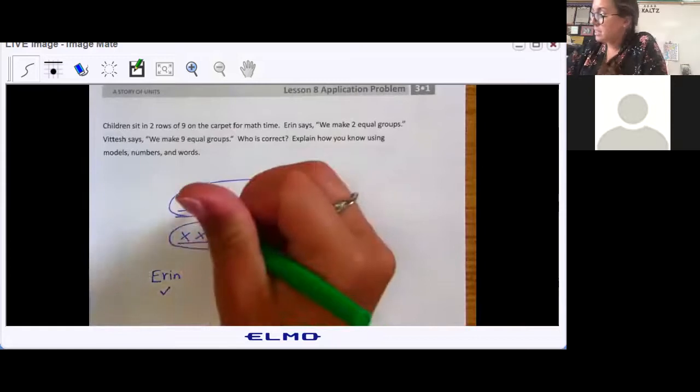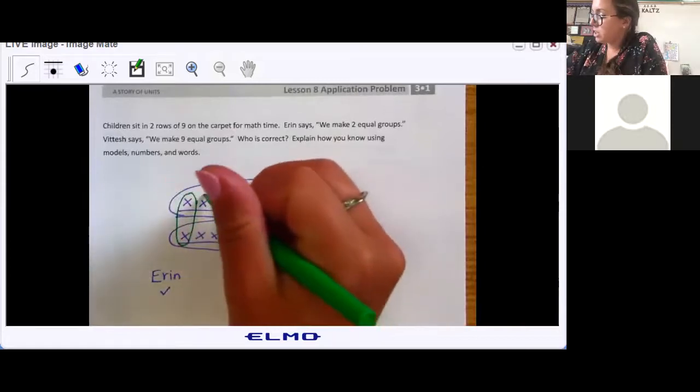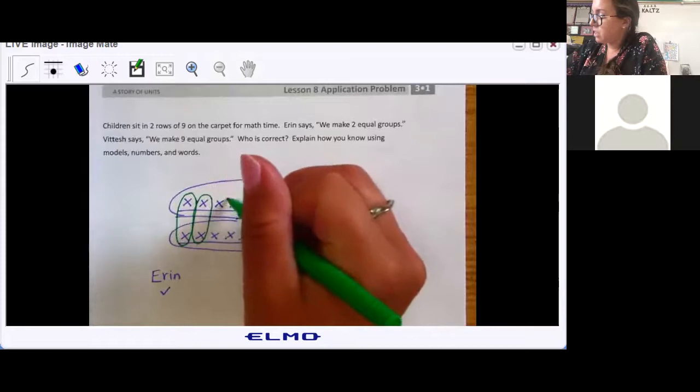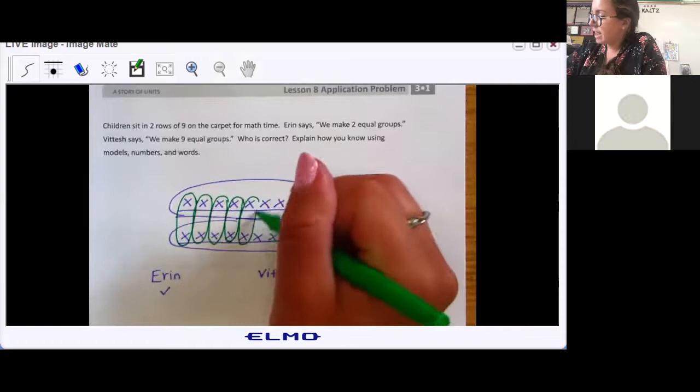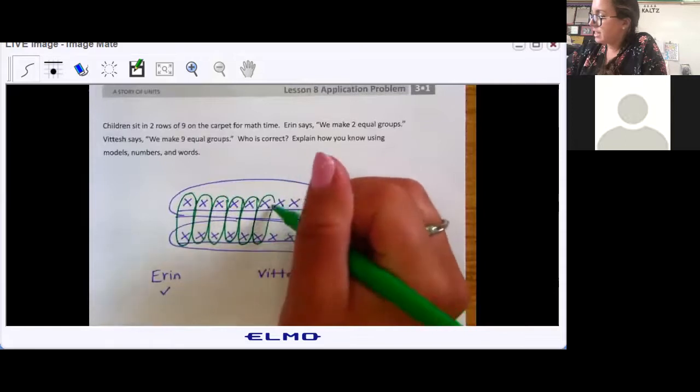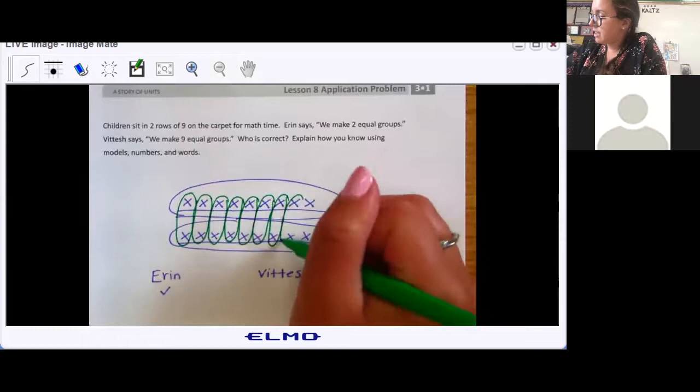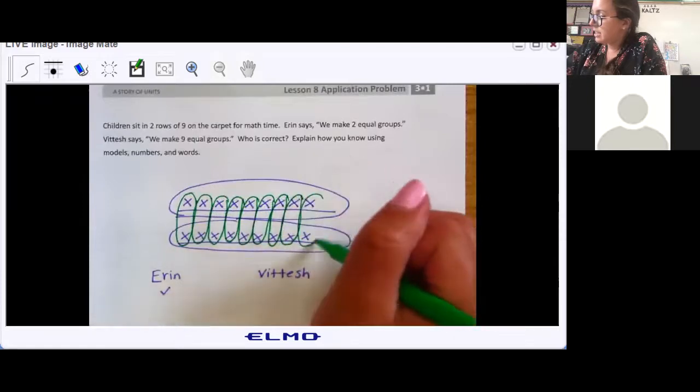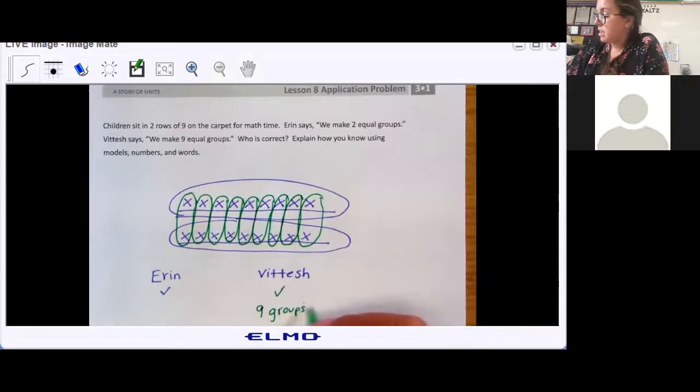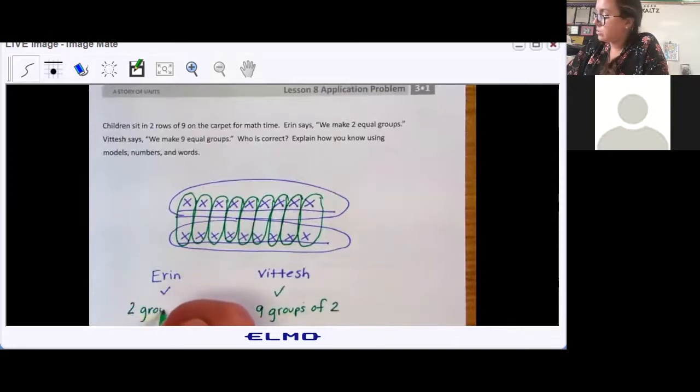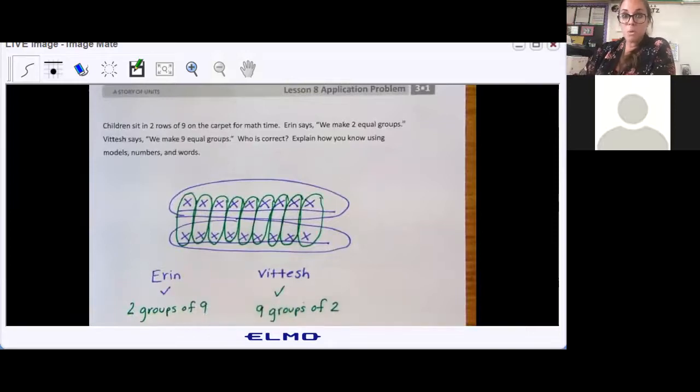If we circle them this way, we have one equal group of two - two, three, four, five, six, seven, eight, nine. So Vatish is also correct. There's nine groups, two groups of two, and Erin sees two groups of nine. So they're both correct.